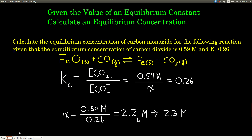The other kind of calculation we can do is: if we know the value of the equilibrium constant but we don't know the equilibrium concentration of one of the species in the reaction, we can calculate it. Let's say we have this equilibrium reaction: iron(II) oxide reacting with carbon monoxide to make iron and carbon dioxide. We know that the equilibrium concentration of carbon dioxide is 0.59 molar, the value of K is 0.26 — and remember, we're not worrying about units for K. We want to know the equilibrium concentration of carbon monoxide.